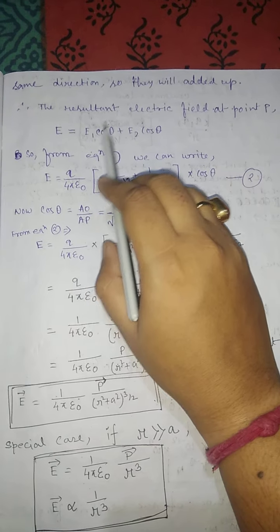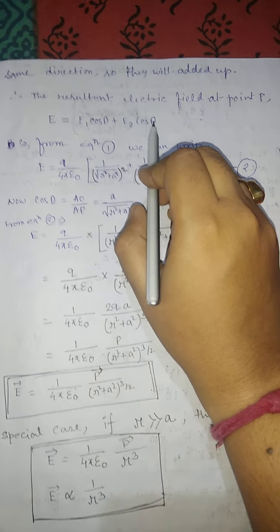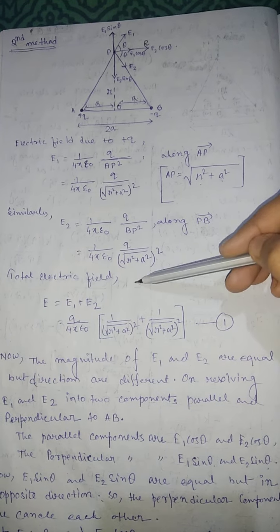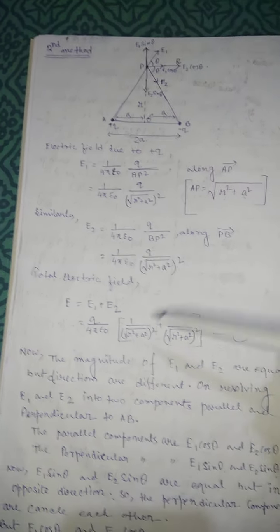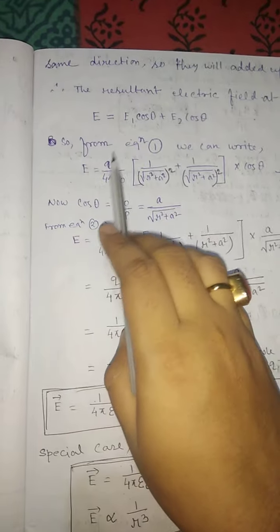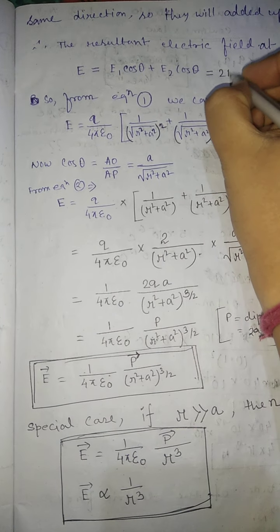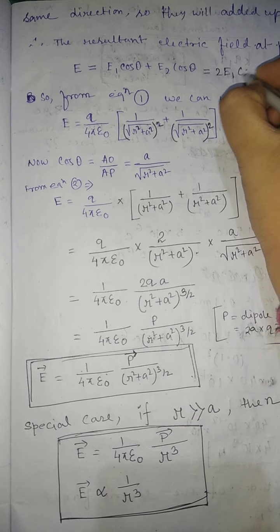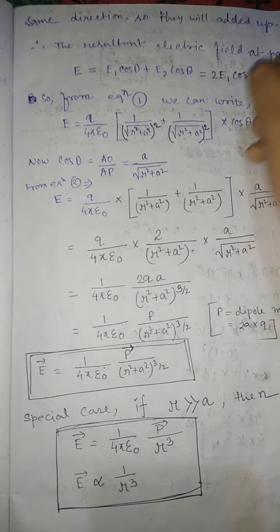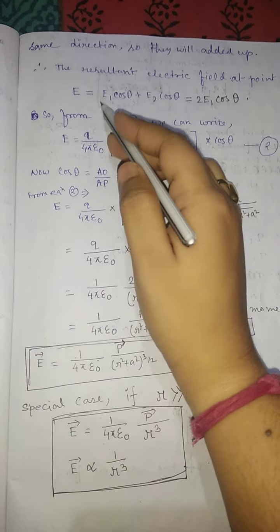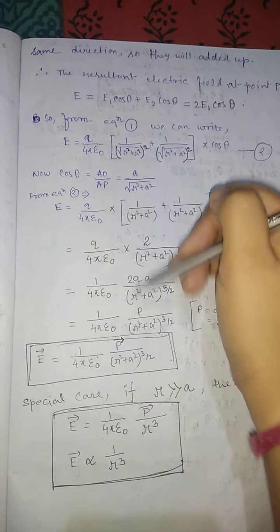The cos components E1 cosθ and E2 cosθ are equal and in the same direction, so they add up. The resultant electric field at point P is E = E1 cosθ + E2 cosθ. Since E1 = E2, this can be written as E = 2E1 cosθ.